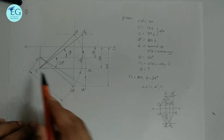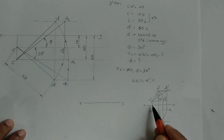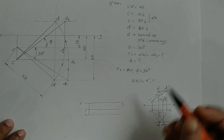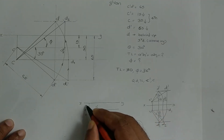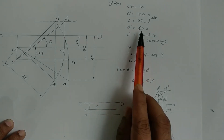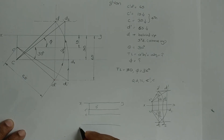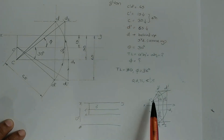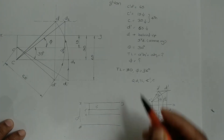First, draw the XY line. Mark point C dash — C is 15 mm below HP and 30 mm in front of VP, so C dash is 15 mm below the XY line. Then locate the original line from C dash. For end D: D is 65 mm below HP, so D dash is 65 mm below the XY line. Mark C dash and D dash at that position in the figure.